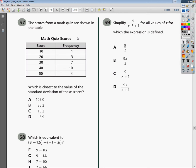Which is closest to the value of the standard deviation of these scores? The standard deviation would be the average distance from the mean, but we're not going to work it out in any other way than our calculator to save ourselves lots of time.